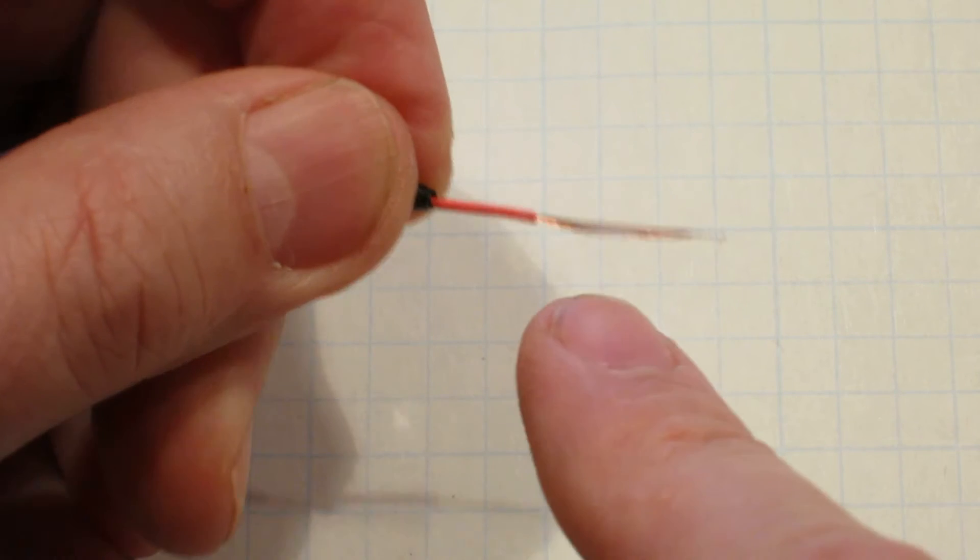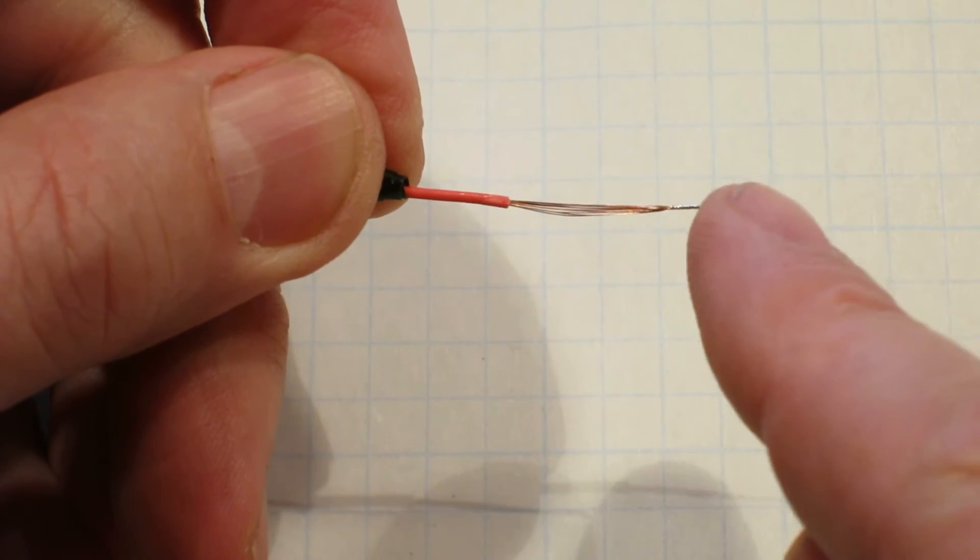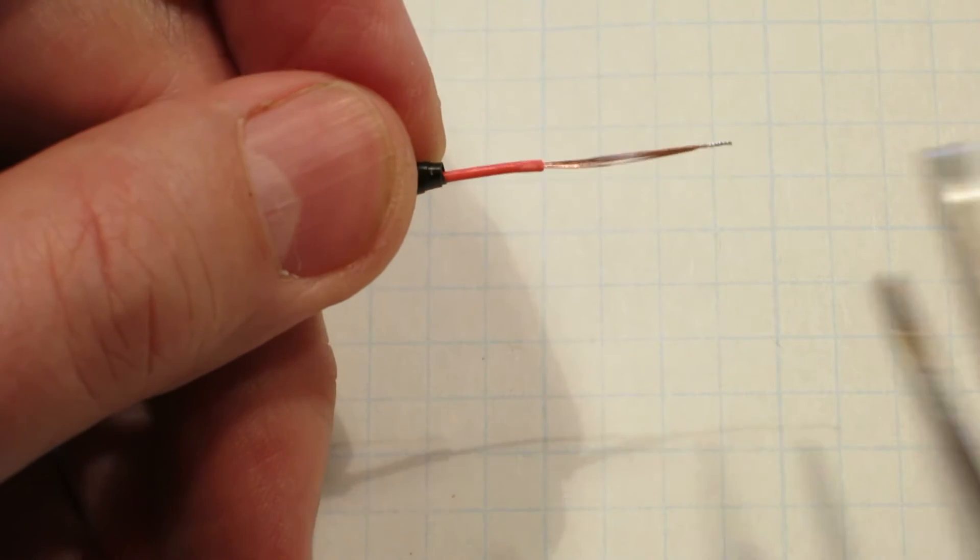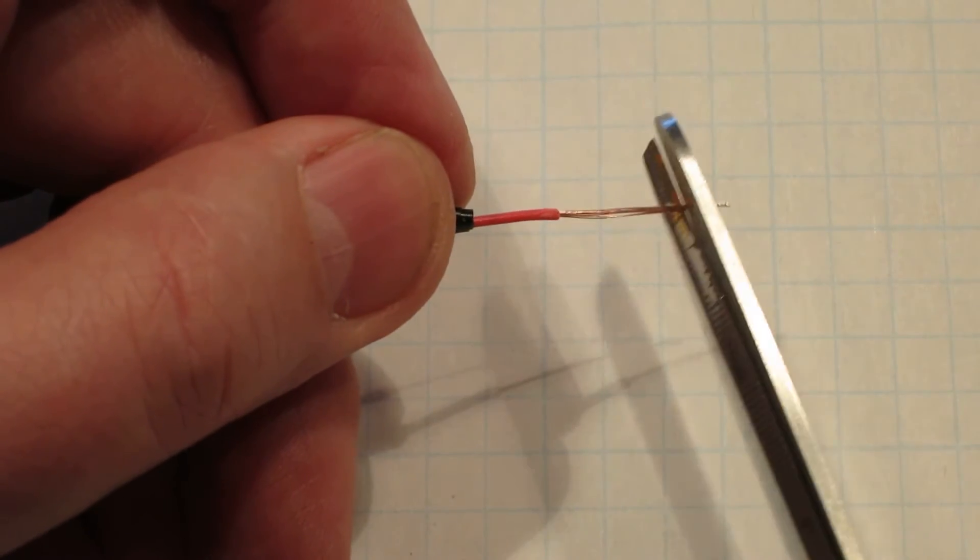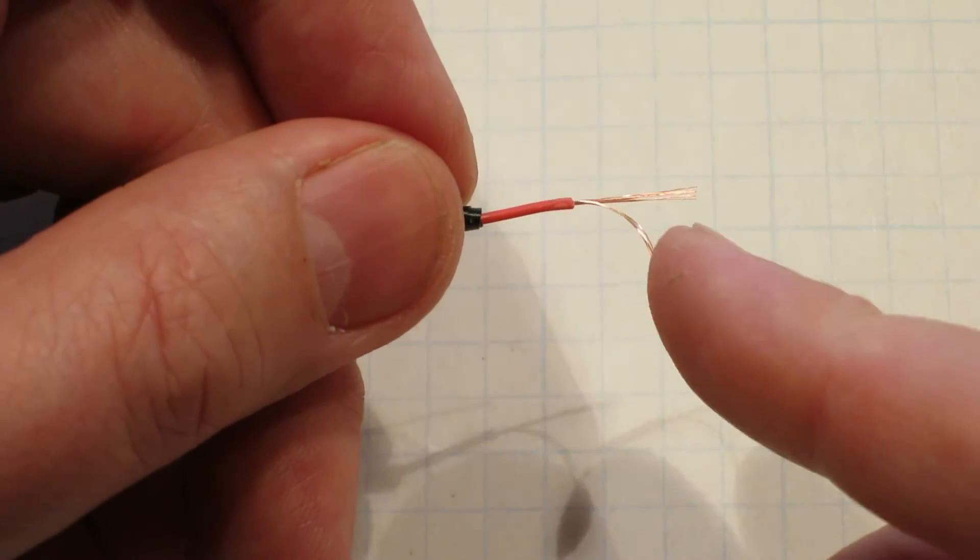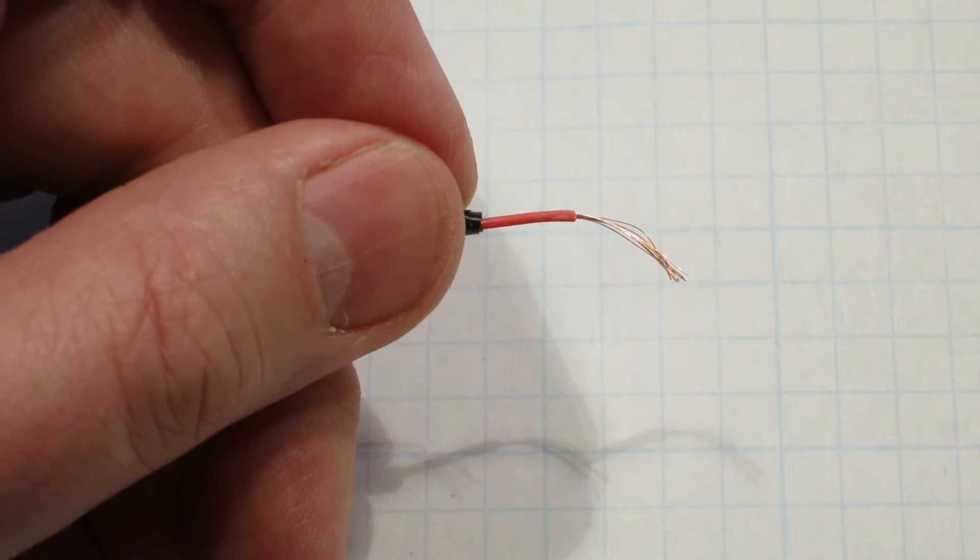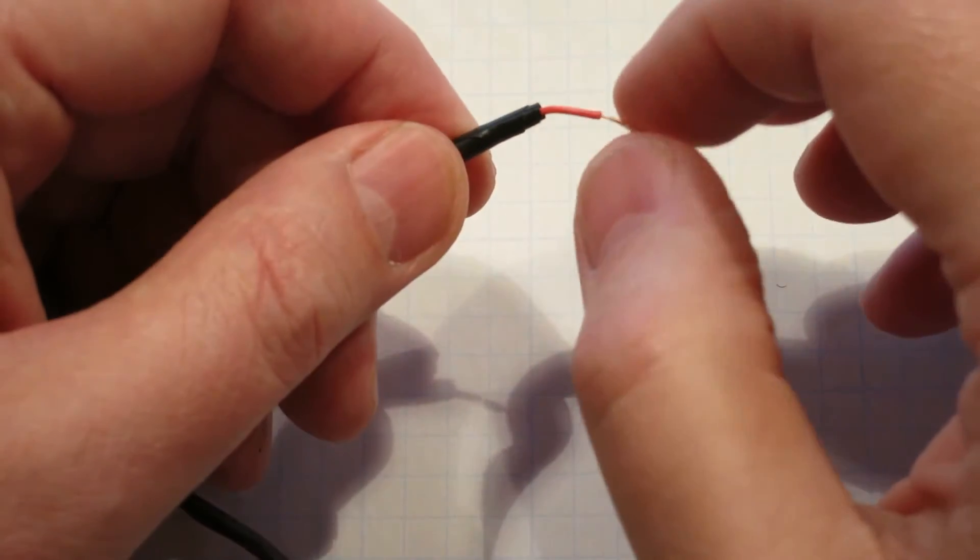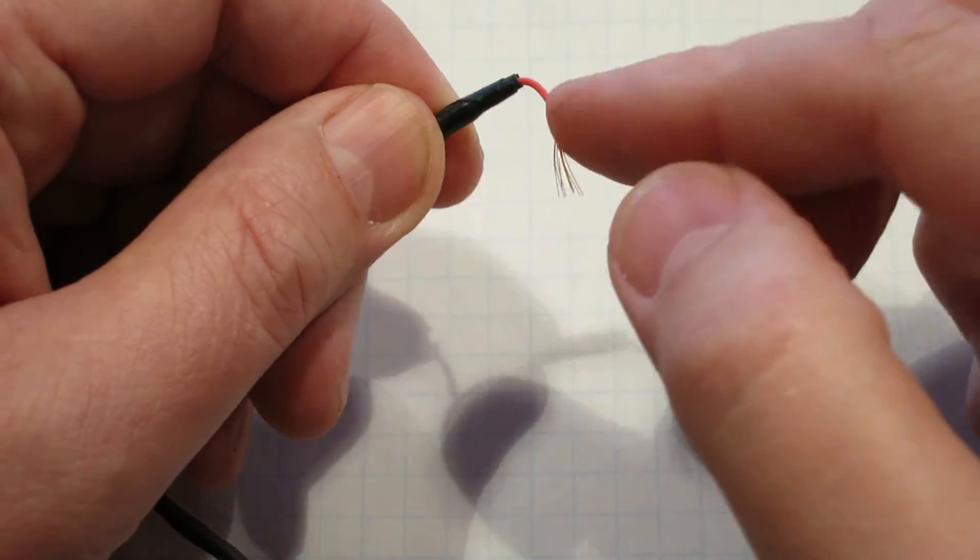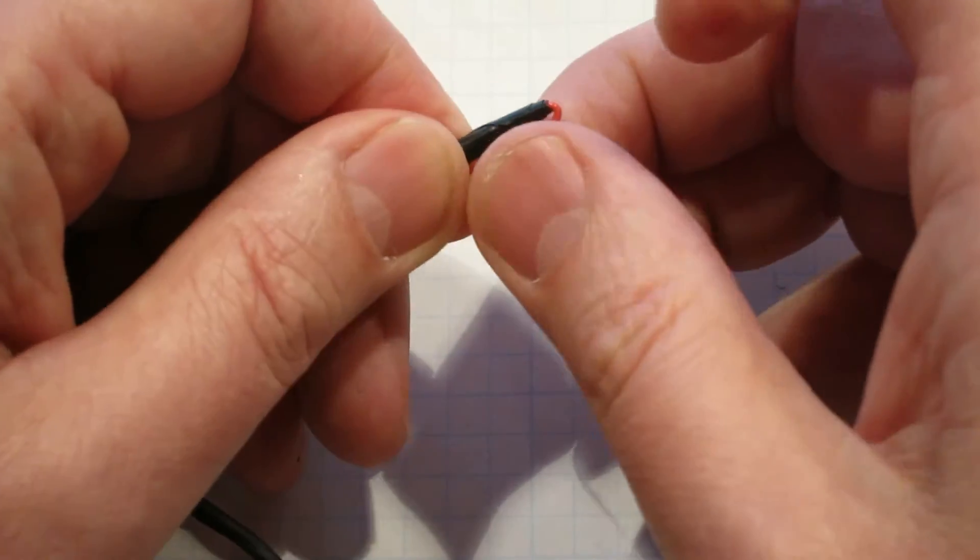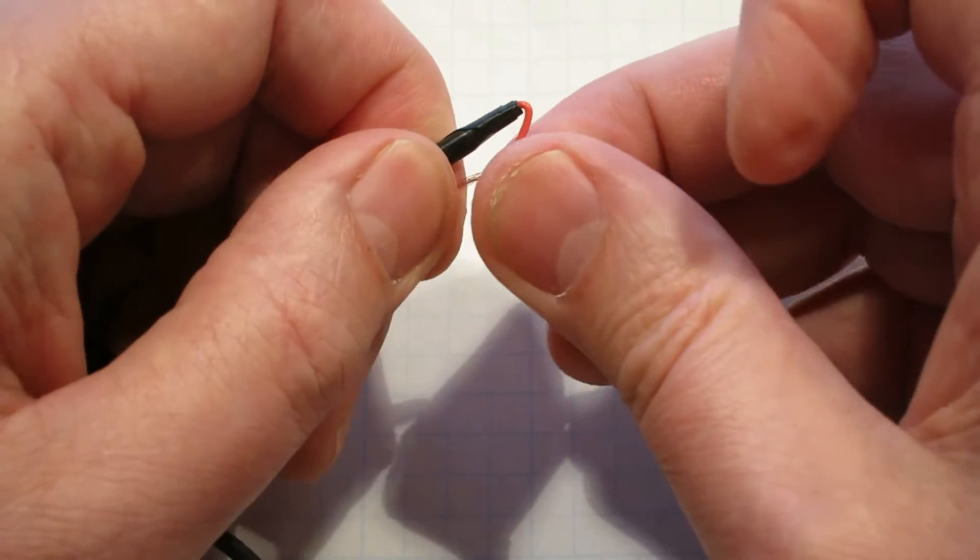The best thing to do is to cut this little tip that's been soldered together off so that you can fray the wire out. Take the wire that's been stripped and bend it back on itself and fray this wire out.